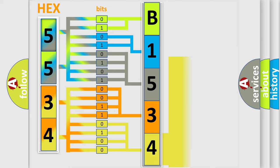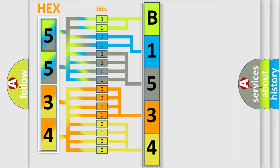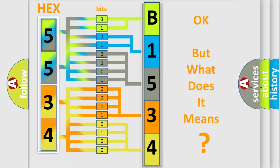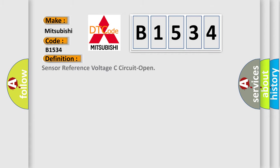A single byte conceals 256 possible combinations. We now know in what way the diagnostic tool translates the received information into a more comprehensible format. The number itself does not make sense to us if we cannot assign information about what it actually expresses. So, what does the diagnostic trouble code B1534 interpret specifically for Mitsubishi car manufacturers?